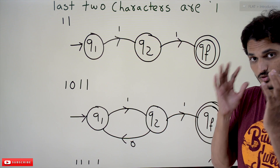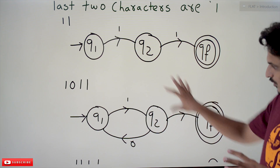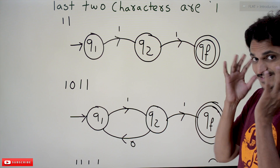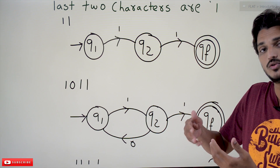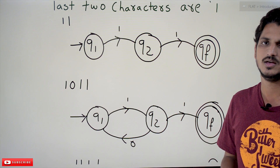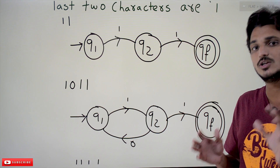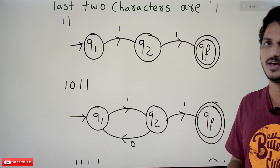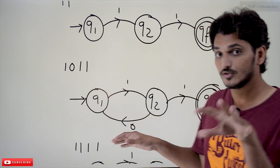Now let's take a few more examples and construct the remaining conditions. Step by step we have to think about different conditions and apply the logic — which state to move to is what you have to decide. Slowly, after about 10 classes, you will get an idea of how to construct the DFA. We will choose examples so that you get a better idea.